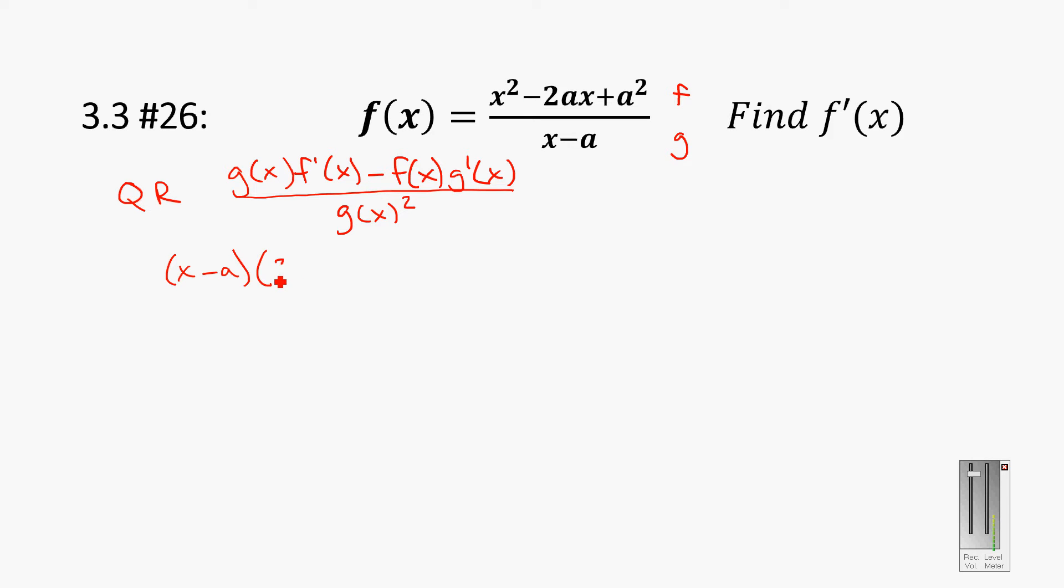Derivative of x squared is 2x. And the derivative of negative 2ax is just negative 2a or minus 2a. And then this a squared, the derivative of that, because it's just a constant, it doesn't have an x in it, it just goes to zero. So there is g of x times f prime of x.